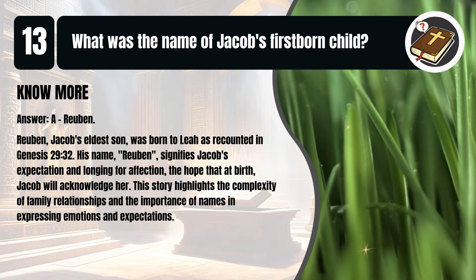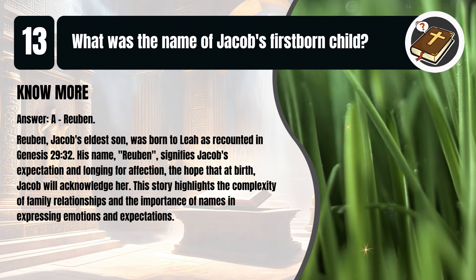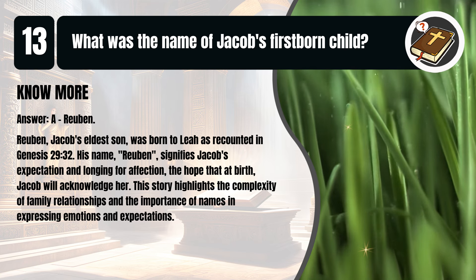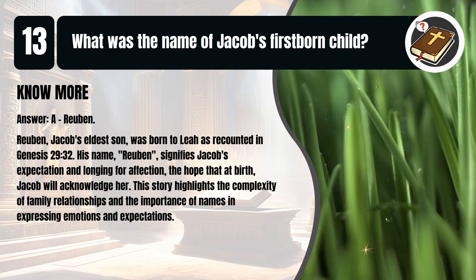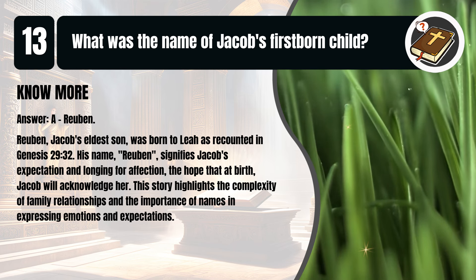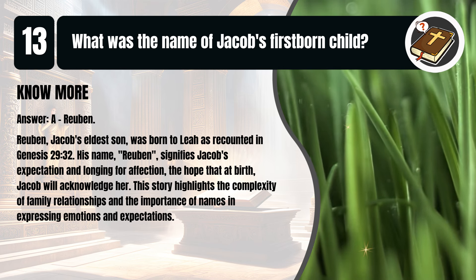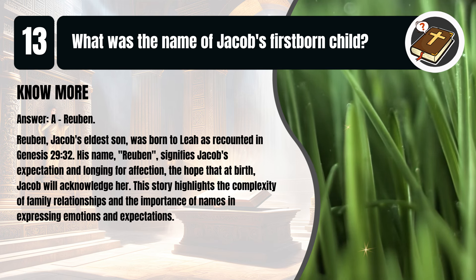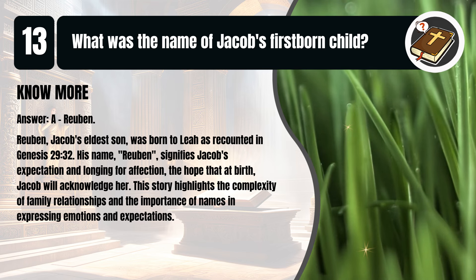That's A. Reuben. Reuben, Jacob's eldest son, was born to Leah as recounted in Genesis, chapter 29, verse 32. His name, Reuben, signifies Jacob's expectation and longing for affection, the hope that at birth Jacob will acknowledge her. This story highlights the complexity of family relationships and the importance of names in expressing emotions and expectations.